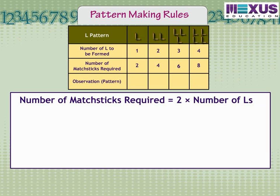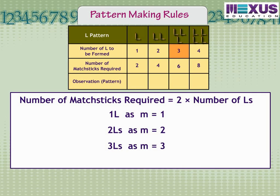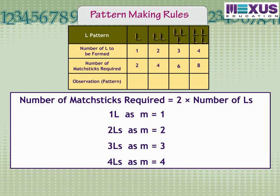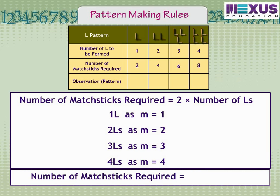For instance, let's take letter M for the number of Ls. Let's assume one L as M1, two Ls as M2, three Ls as M3, and four Ls as M4. M is an example of a variable and can be one, two, three, and so on — it can be any natural number. We then write: number of matchsticks required is equal to two times M, or 2M. Note that 2M is the same as two times M.